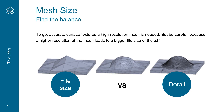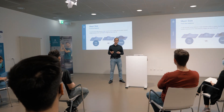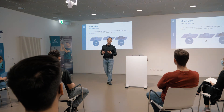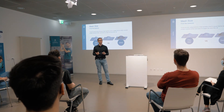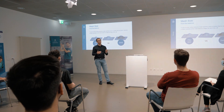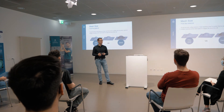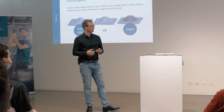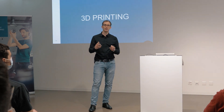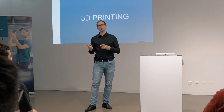Mesh size is also very important. If you want an accurate surface texture you need a high-resolution mesh. Be careful though — high mesh resolution also means a bigger file size for the STL file. Depending on your computer, we recommend a file size between 50 and 100 megabytes. These are all the key parameters to know when modeling 3D textures.